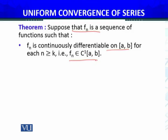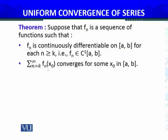I've explained that this means fn belongs to C1[a,b]. C1[a,b], C2[a,b]—these are the classes of functions defined in mathematics that I've also explained. Furthermore, summation fn(x₀) at some point, this series converges. It's very important that it converges at one point.